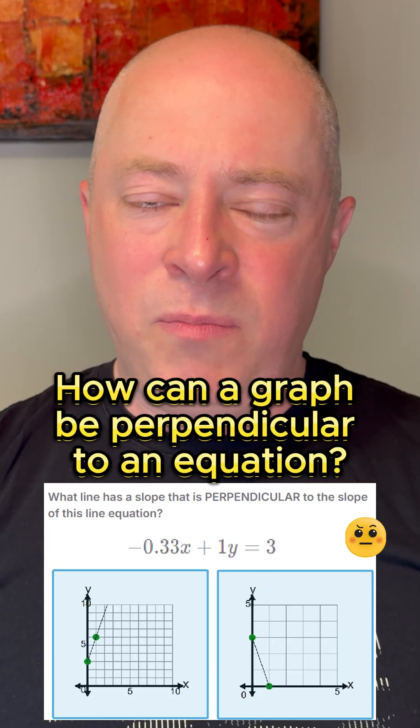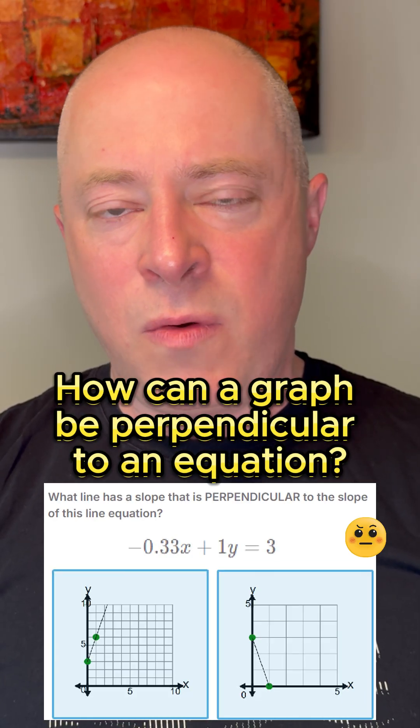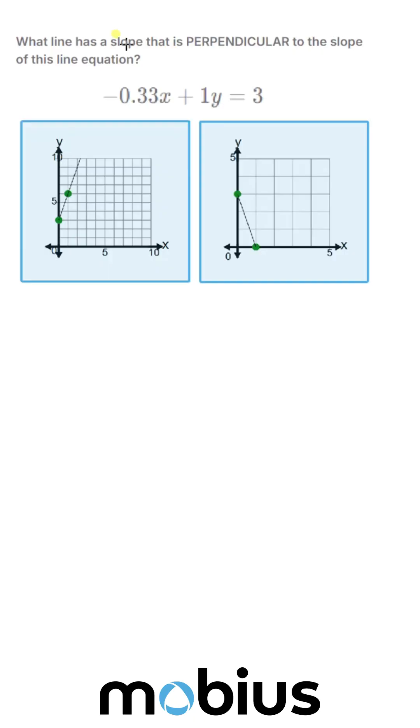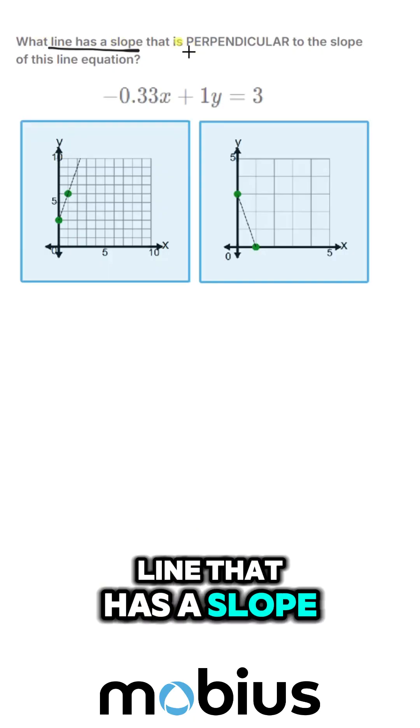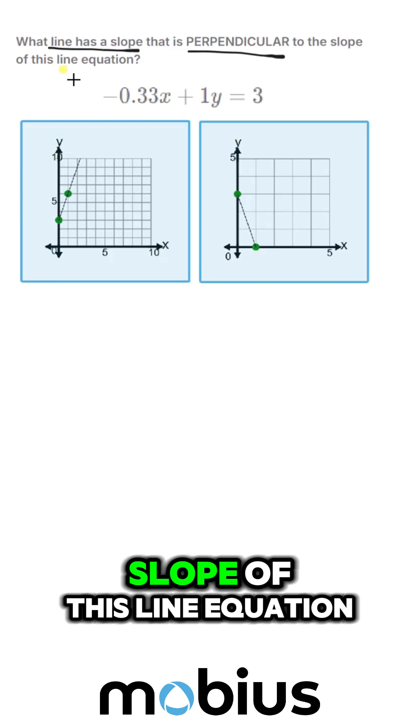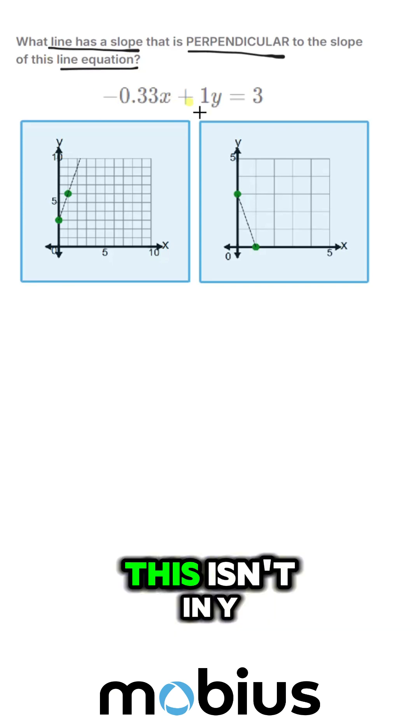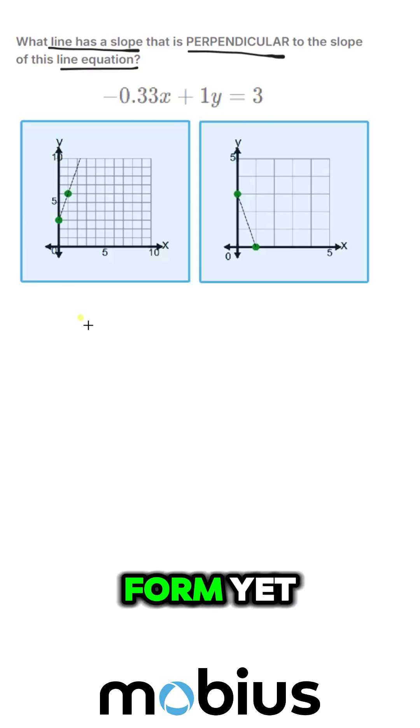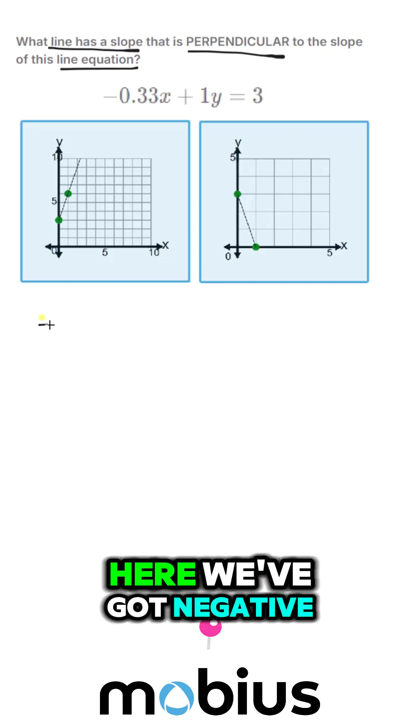How can a graph be perpendicular to an equation with variables? Okay, we need a line that has a slope that's perpendicular to the slope of this line equation. This isn't in y equals mx plus b form yet. So let's rewrite it here.